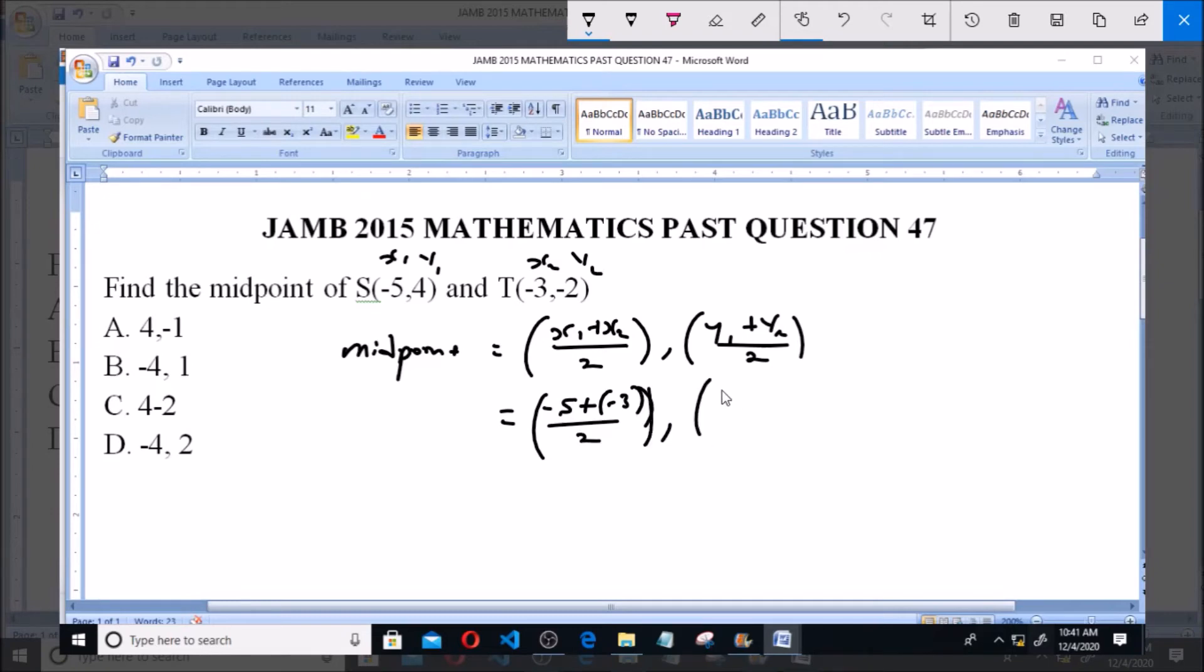So this will be giving us -5 minus 3 all over 2, comma, 4 minus 2 all over 2. So we're having this equals to -5 minus 3 will give us -8 all over 2, comma, 2 all over 2.